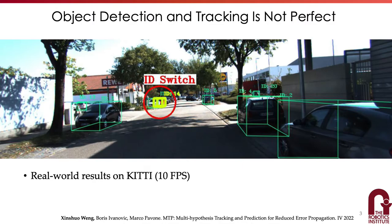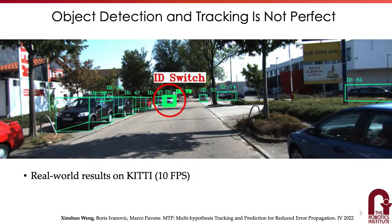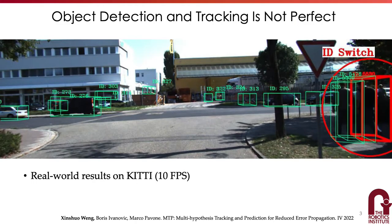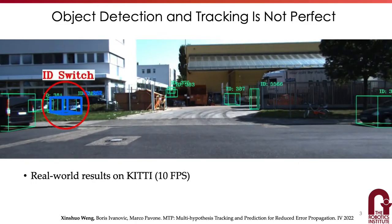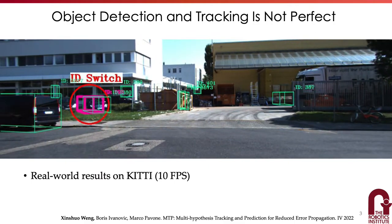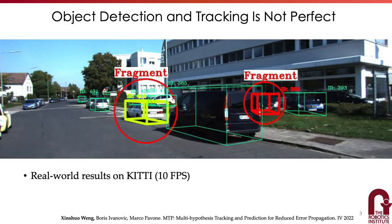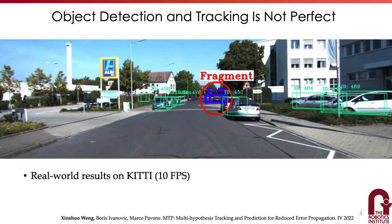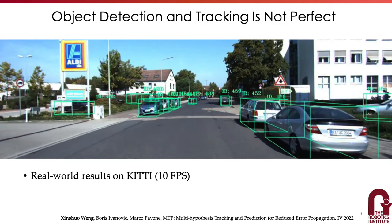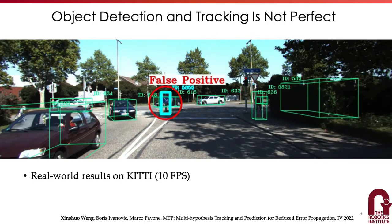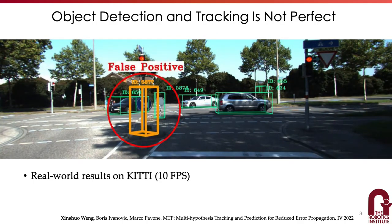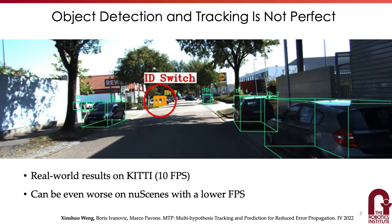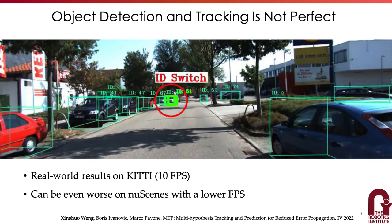Here we show a demo on real-world autonomous driving datasets. Specifically, we ran state-of-the-art 3D detection and tracking methods on the KDE datasets. The green boxes indicate objects with consistent detection and tracking, while the bolded boxes with various colors indicate a perception error. Because the detector and trackers have strong performance, most objects at most frames are correctly detected and tracked. However, there are still a small portion of objects having perception errors, such as identity switches or fragments, as shown in these bolded boxes. This situation can get even worse on the nuisance datasets, which has a lower frame rate and sparser LiDAR sensor.